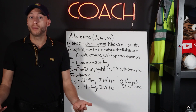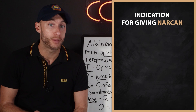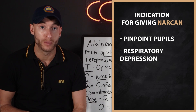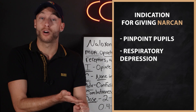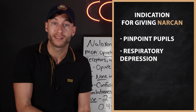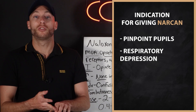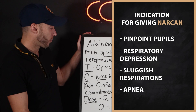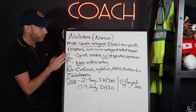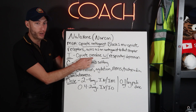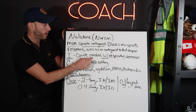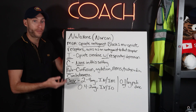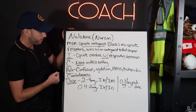Other things you may see: pinpoint pupils. Respiratory depression means a slow respiratory rate — sluggish respirations. That's what we're looking for in the setting of an opiate overdose. This is why we give it — it's an antidote for opiates.